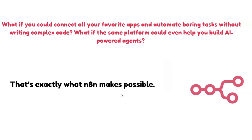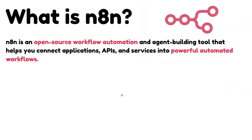N8N makes it possible — connecting with different apps and repeating tasks without doing them multiple times manually. You can just automate that. Along with that, you can also integrate AI models to do your tasks. Let's explore what it is, why we use it, and what the different components of N8N are. N8N is an open source workflow automation and agent building tool that helps you connect applications.